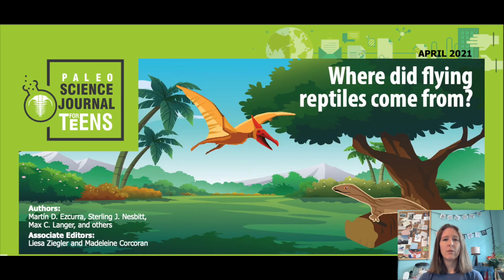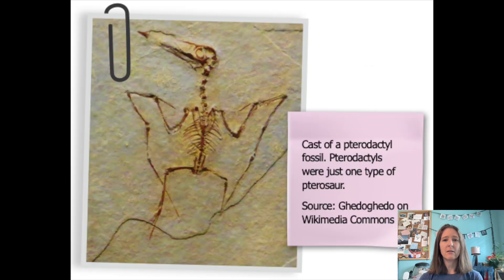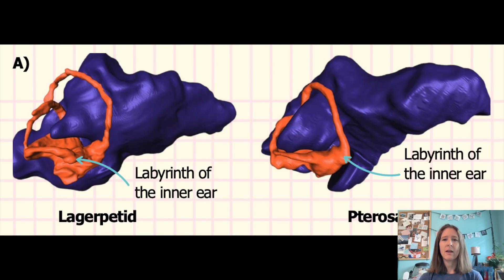Part three is reading the article titled 'Where did flying reptiles come from?' It discusses the similarities between lagerpetids, a small group of non-flying reptiles, and pterosaurs, and provides evidence for how pterosaurs might have started to fly.